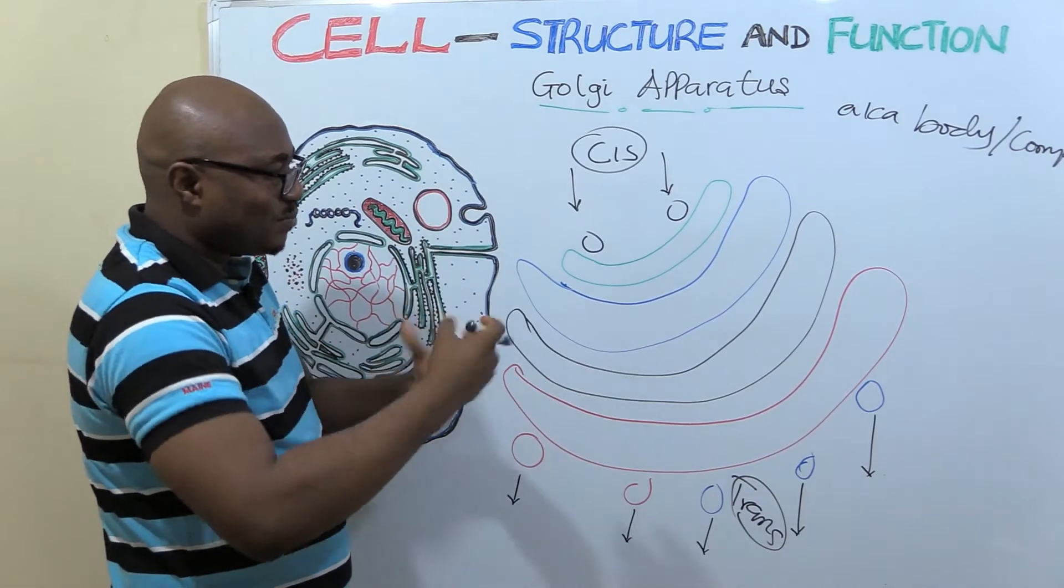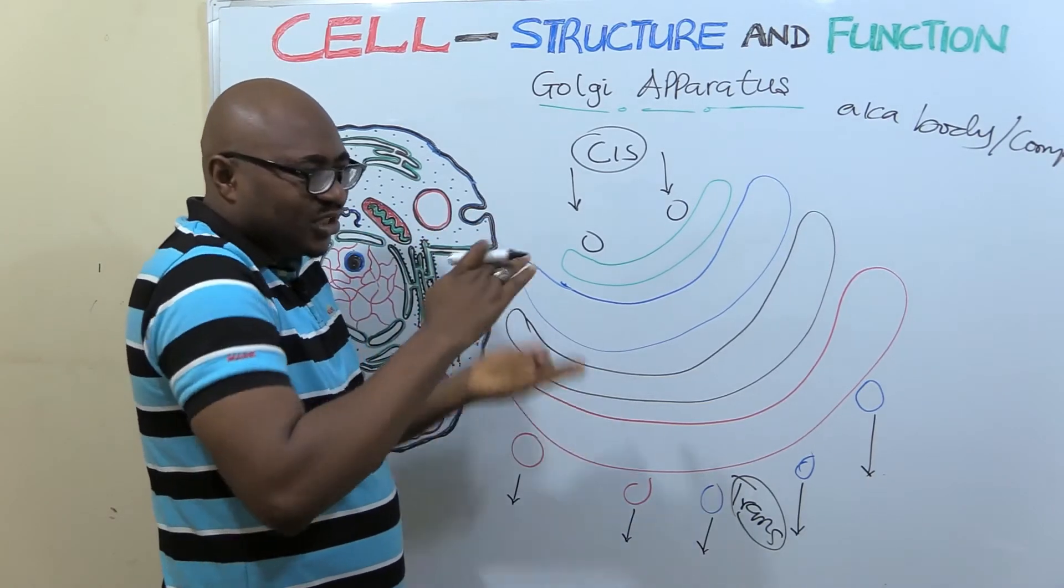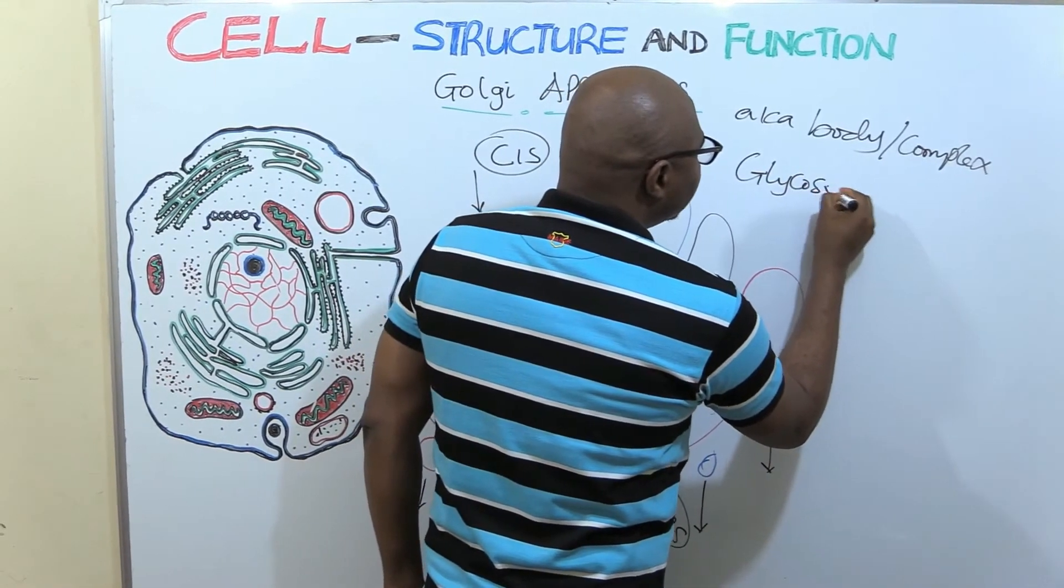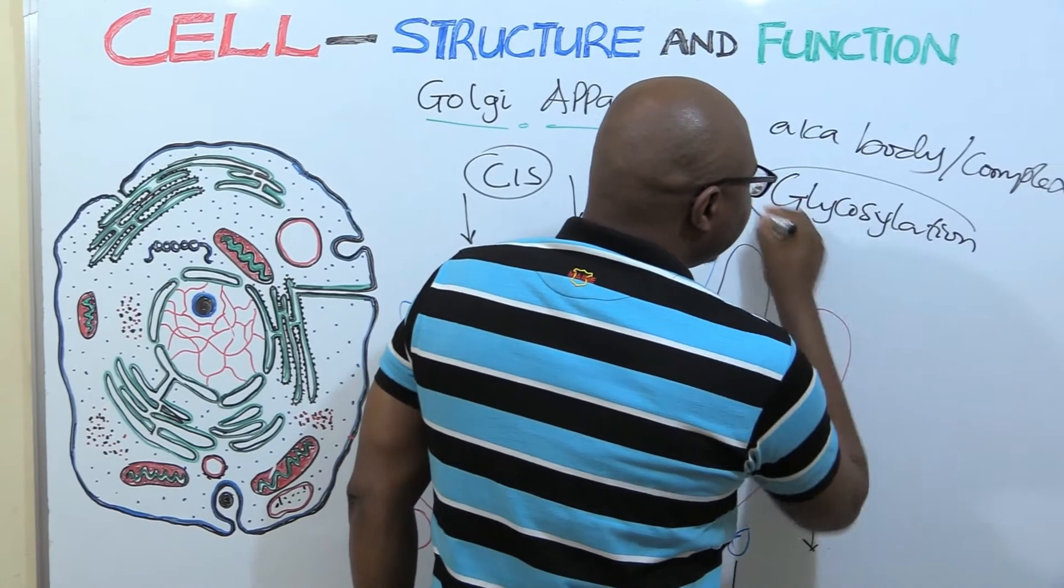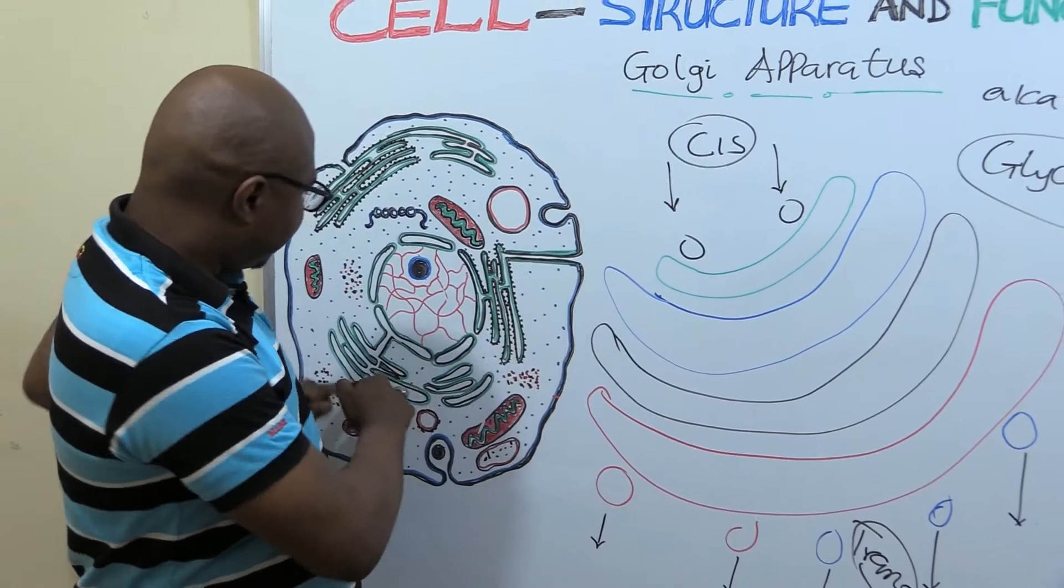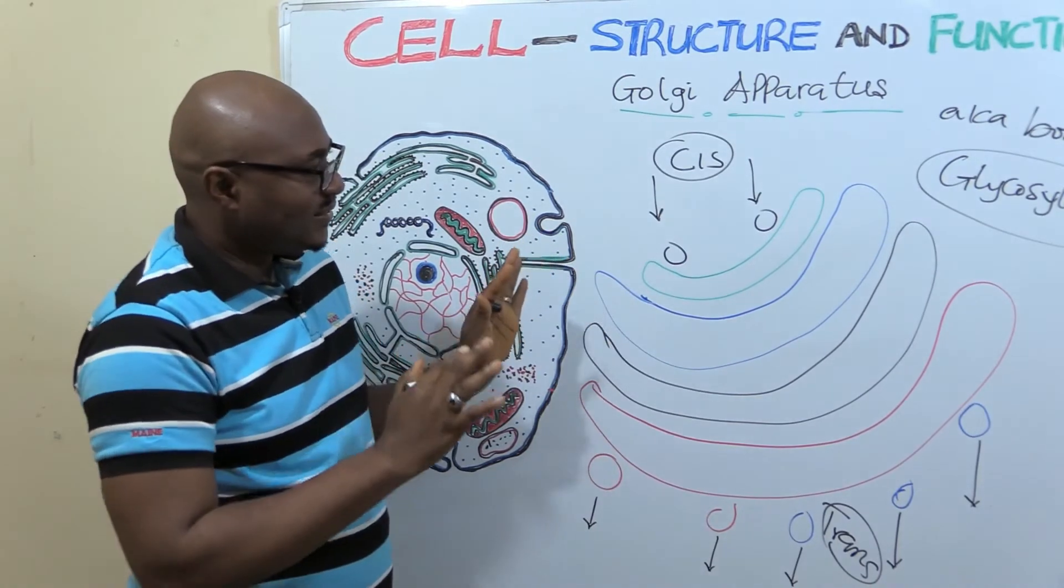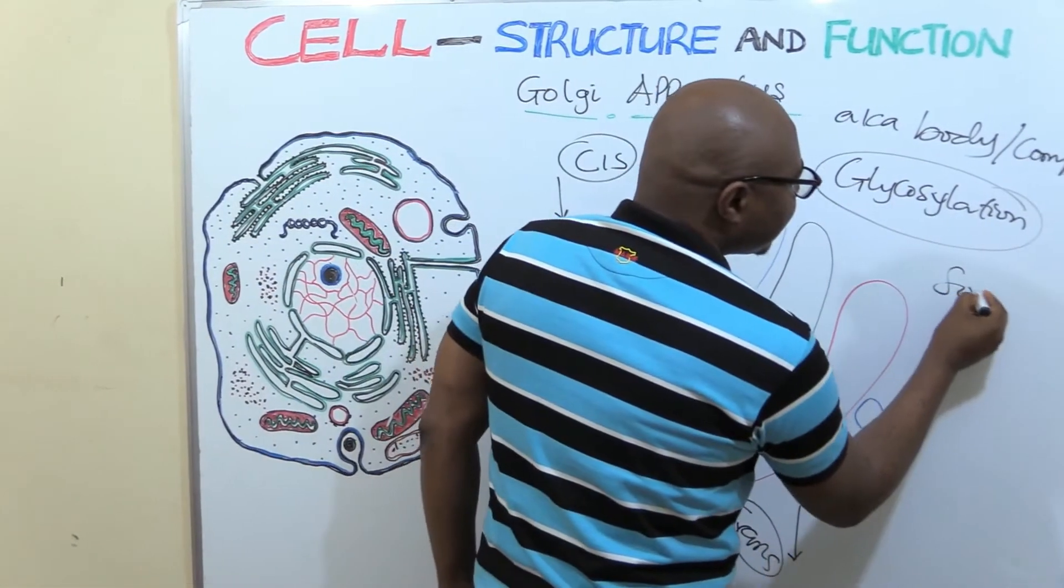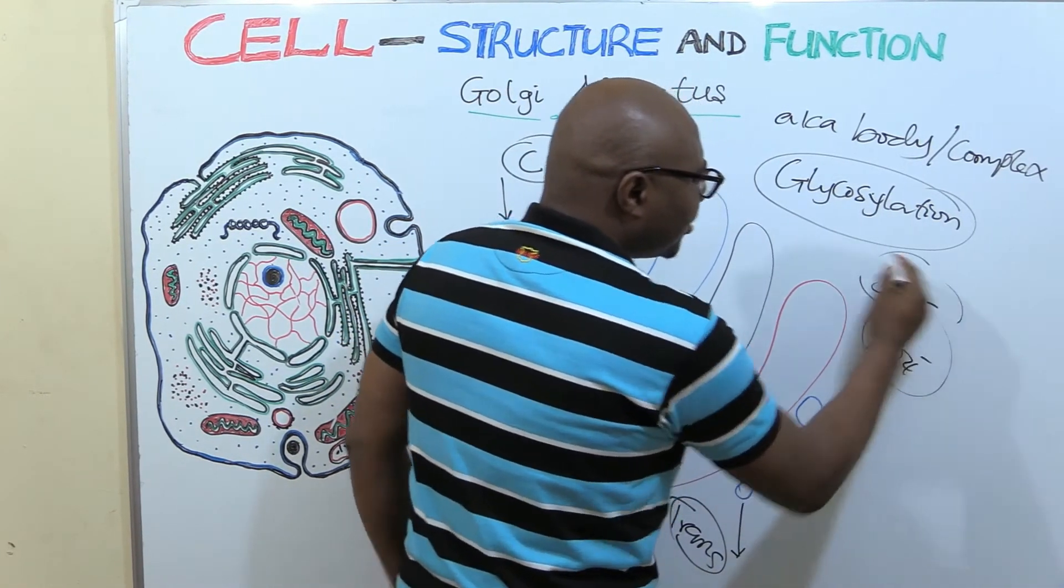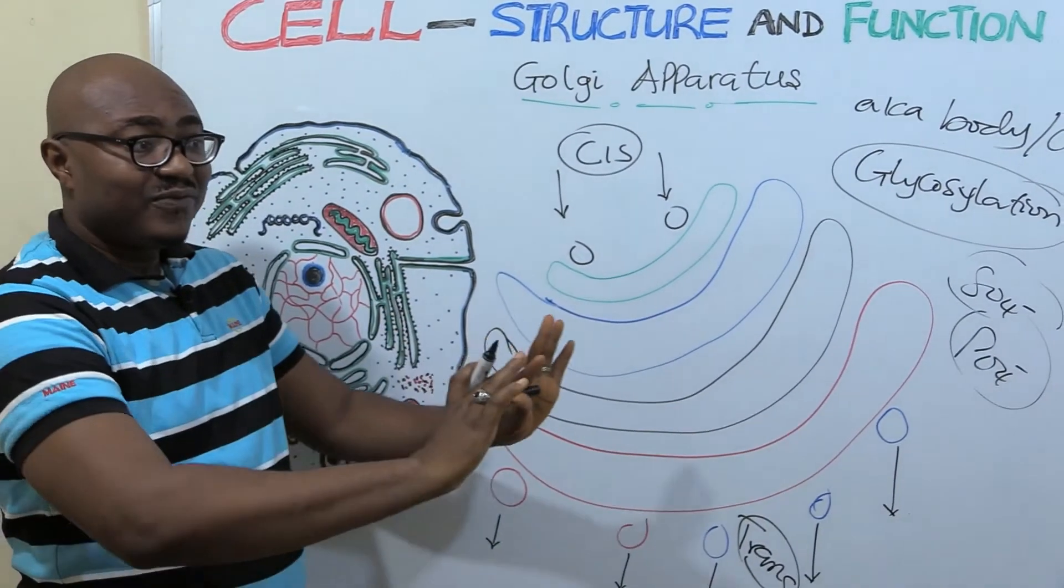So that's exactly how to understand the function of the Golgi apparatus. It packages and modifies. And most of the time it adds carbohydrate substances to the proteins. It's called glycosylation. So it will add that. It becomes a glycoprotein. It becomes glycolipids. Sometimes it adds sulfate compounds to it or phosphate.